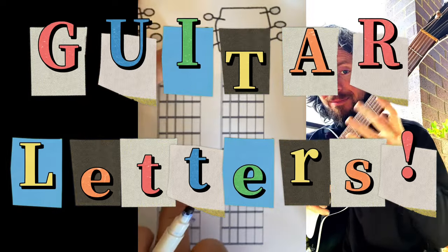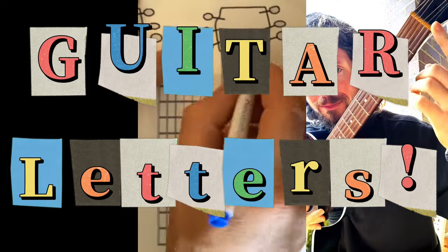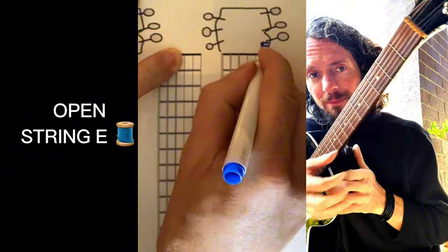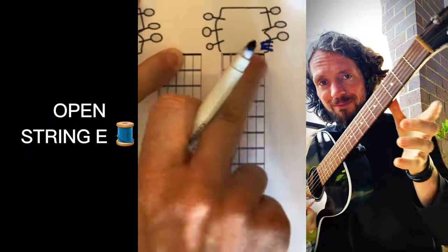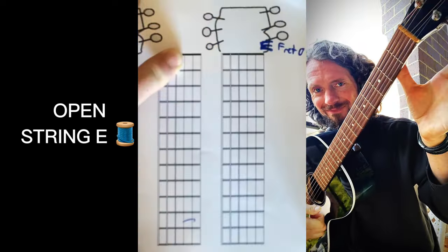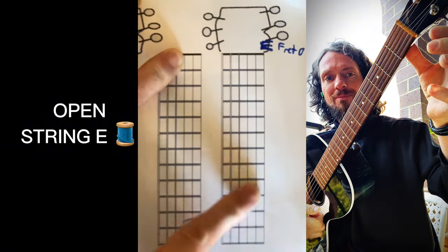On the guitar you can find your letters on the fretboard a few different ways. One of the ways is your open string, whatever the letter is. Like the smallest string here, this happens to be an E. If you played that on fret zero, that would be our E.